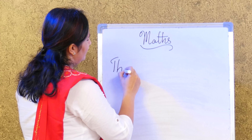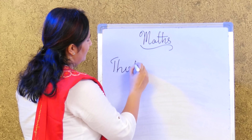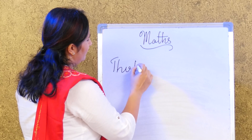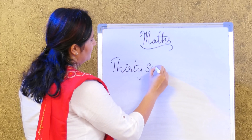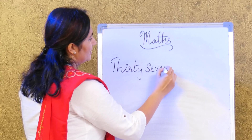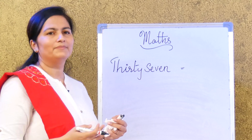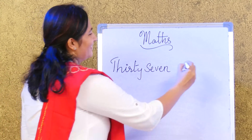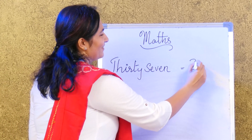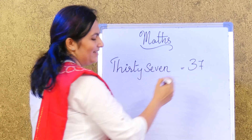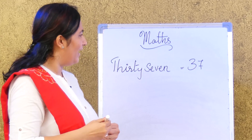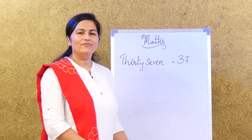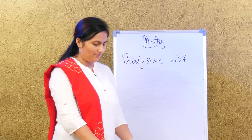For example, the number name given is thirty-seven, so the numeral is 37. Take a look at the examples and fill in the rest of the blanks.